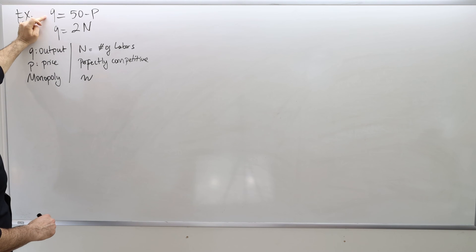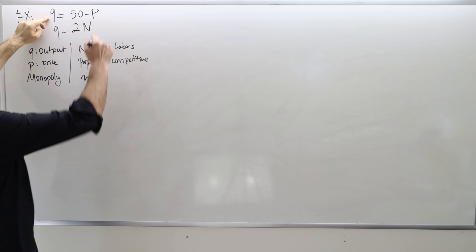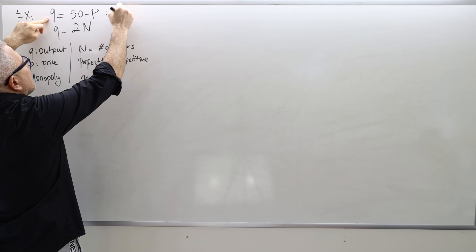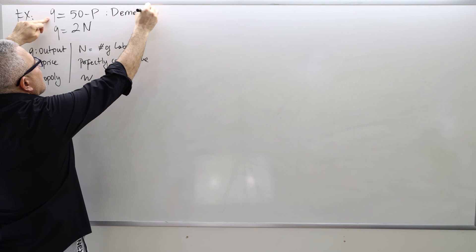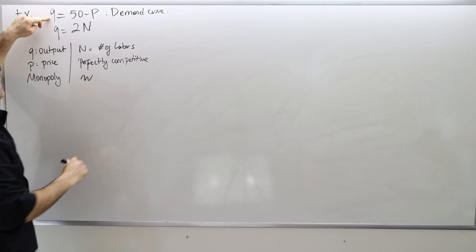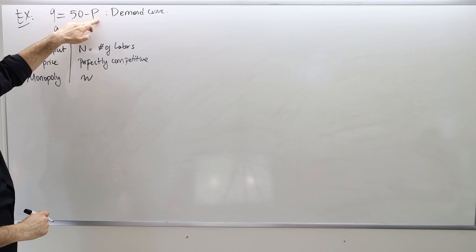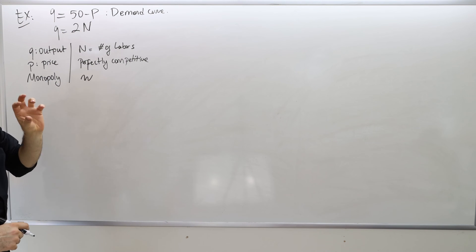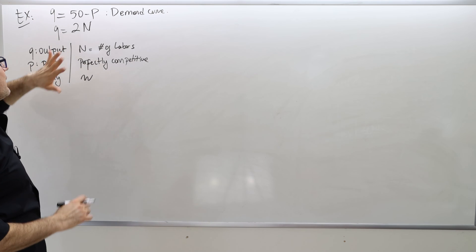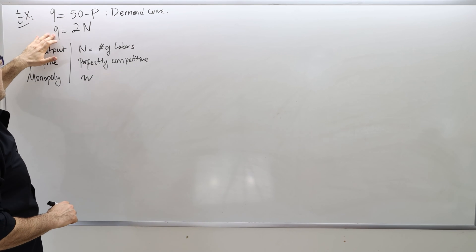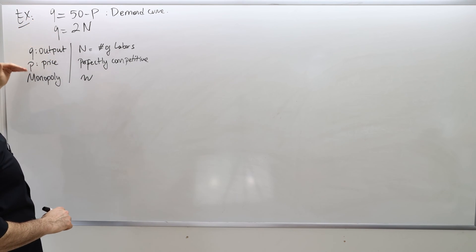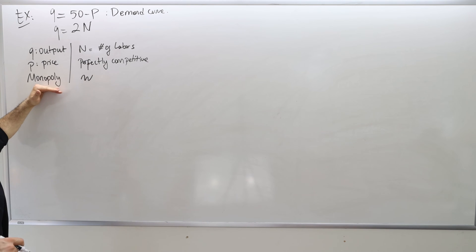So here we have the demand curve. The quantity demanded is equal to 50 minus P. So P is the price of the output, and Q is the quantity of the output, and the firm is monopolist in the output market.